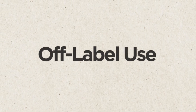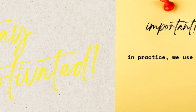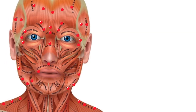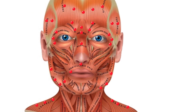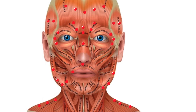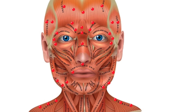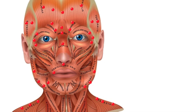Off-label use: officially, in most countries, botulinum toxin is licensed for a limited number of indications, such as glabellar frown lines. However, in practice, we use it in many more areas — the forehead, crow's feet, bunny lines on the nose, masseter hypertrophy, gummy smile, platysmal bands, and even areas of the body outside the face. These are referred to as off-label uses. The responsibility lies with us as clinicians to inform our patients, document that they understand, and rely on the scientific evidence that supports these practices.